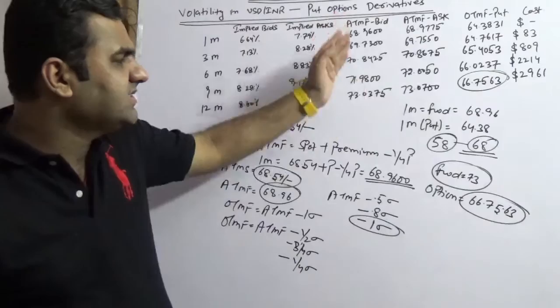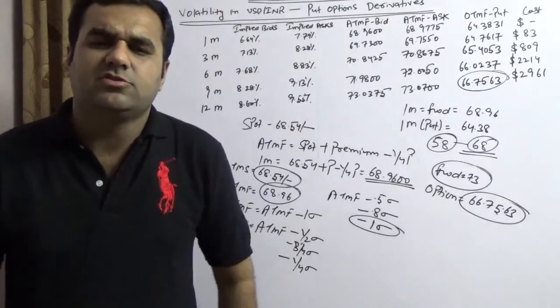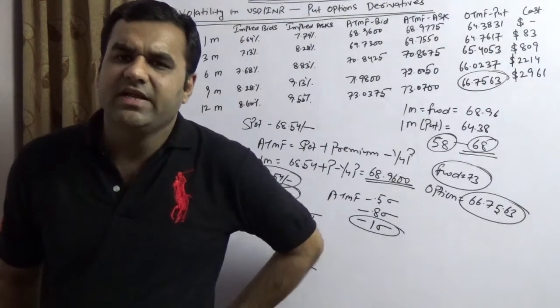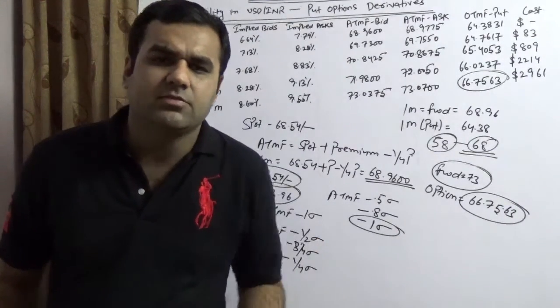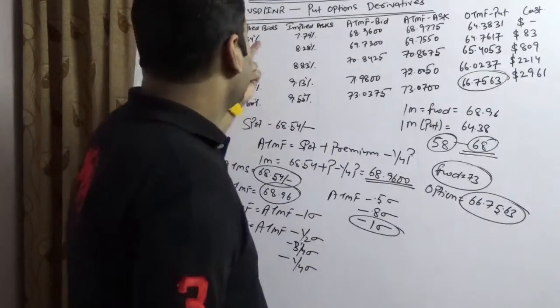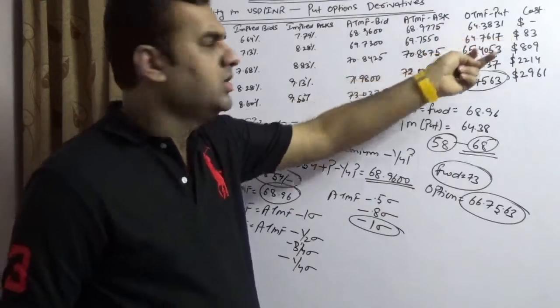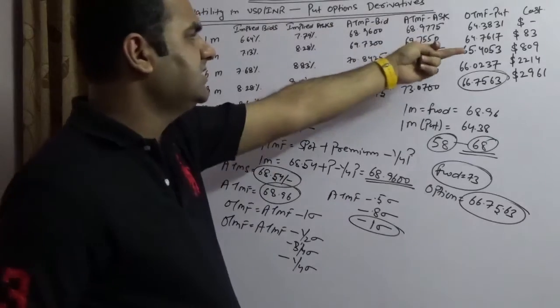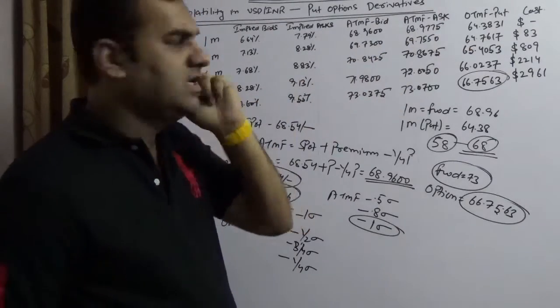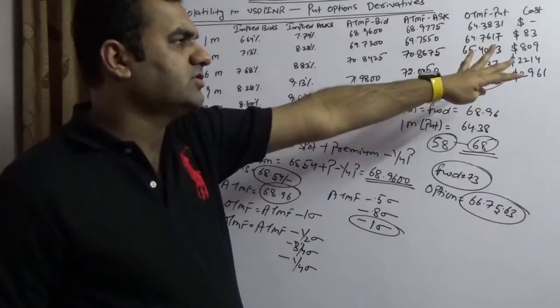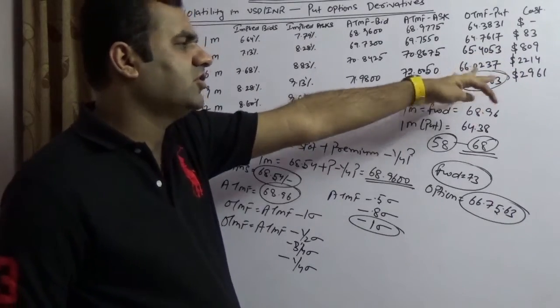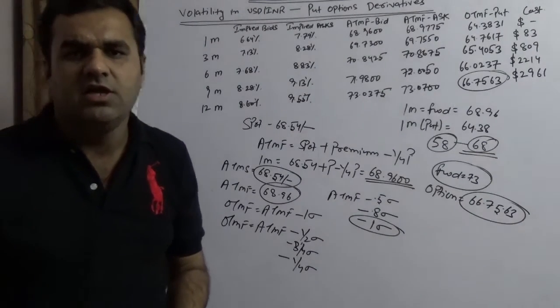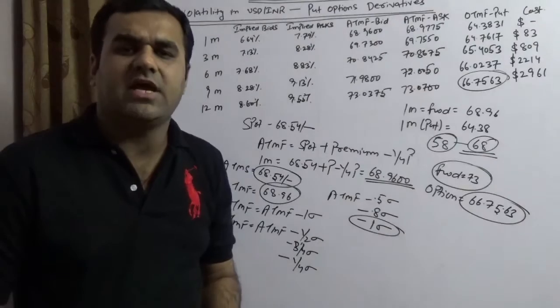Now as we understand, put is the thing but it is a derivative instrument. When you're going to sell your receivable at an agreed rate to a bank, when you sell at an agreed rate to a bank, you will pay some cost. Now this is a cost. Now if you sell for one month the cost is just zero, if you sell for three months the cost is 83 dollars, if you sell for six months the cost is 809 dollars, if you sell for nine months the cost is roughly 2200, and if you sell for one year the cost is approximately 3000 dollars. Please note that as per accounting standard AS 133, US GAAP and IFRS 13, you can amortize that premium.